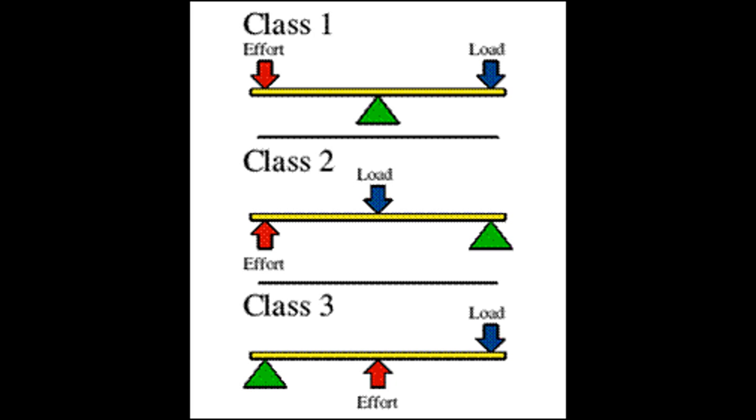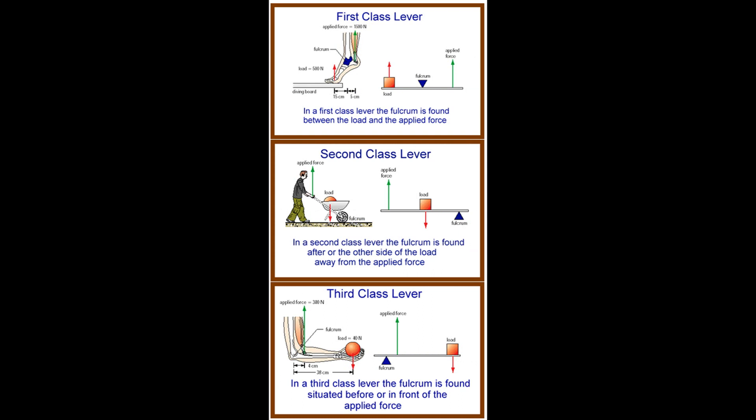In a first class lever, the fulcrum is found between the load and the applied force — as you can see in the picture, you have the load, the fulcrum in the center, and the applied force. In a second class lever, the fulcrum is found on the other side of the load, away from the applied force — the wheelbarrow is a perfect example. In a third class lever, the fulcrum is situated before or in front of the applied force — the arm is a perfect example of a third class lever.